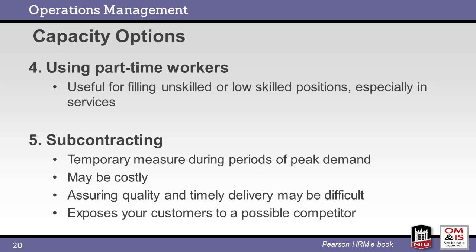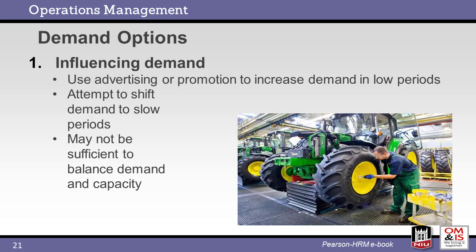Work may also be subcontracted to an external source, but may be costly and have lower quality standards. You may also create a competitor by training a third party to manufacture your product. On the demand side, steps can be taken to manage customer needs to more closely align with operational capacity. Advertising may be used to increase demand during slow periods, while demand may be shifted to slow periods when capacity is exceeded. For example, restaurants are often slow early in the week, so they offer discounts for coming in during those times.